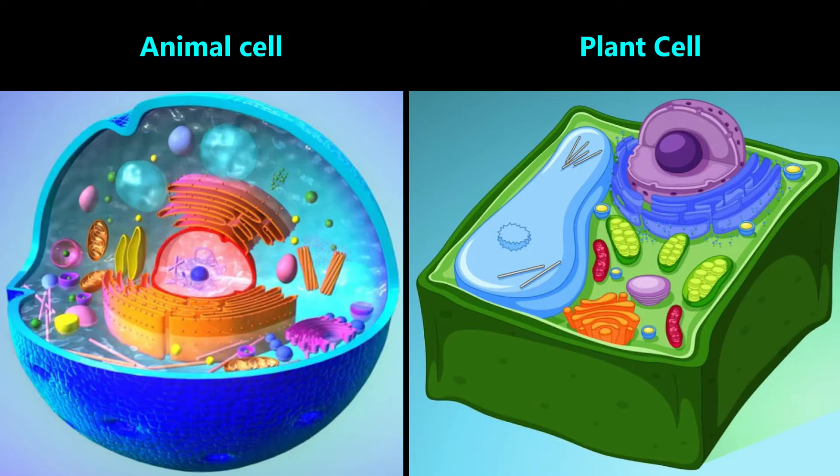The small objects inside the cells are called organelles. Although some organelles are unique to plants or animals, such as the chloroplasts which we saw earlier in the live plant leaf, many organelles are in both animals and plant cells.